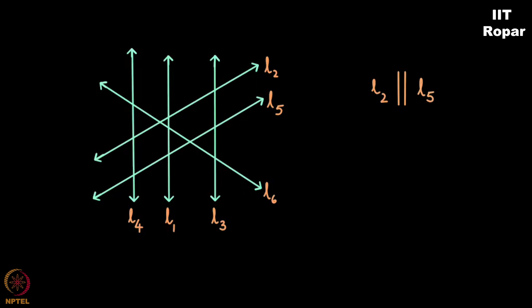Which means in the graph, L2 will have a line arrow pointing towards L5, and L5 is also parallel to L2 obviously, so there will be symmetric arrows right from L2 to L5 and L5 to L2, and so on and so forth.